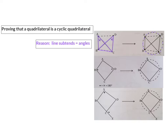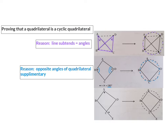In theorem five, we learned that in a cyclic quadrilateral the two opposite angles are supplementary — they add up to 180. So if we can prove that in any quadrilateral the two opposite interior angles add up to 180, we can say that it will be a cyclic quadrilateral. Our reason for this converse is: opposite angles of quadrilateral supplementary.